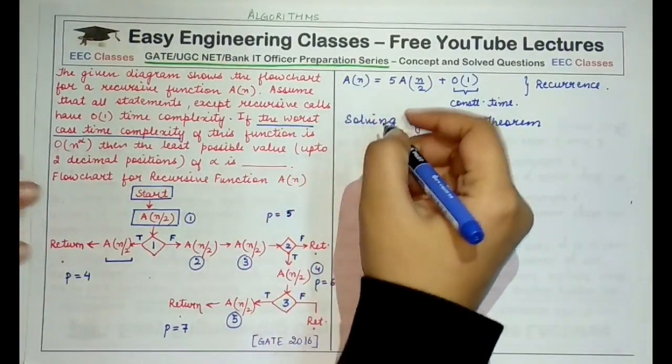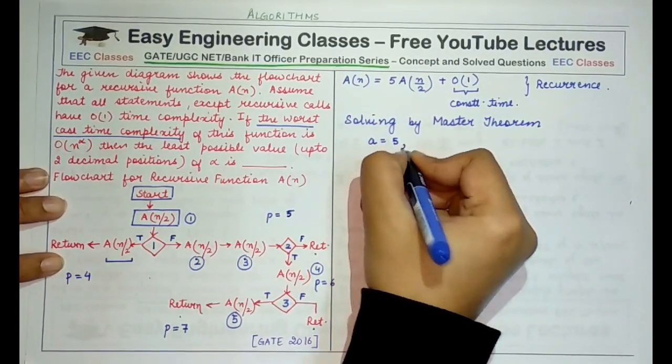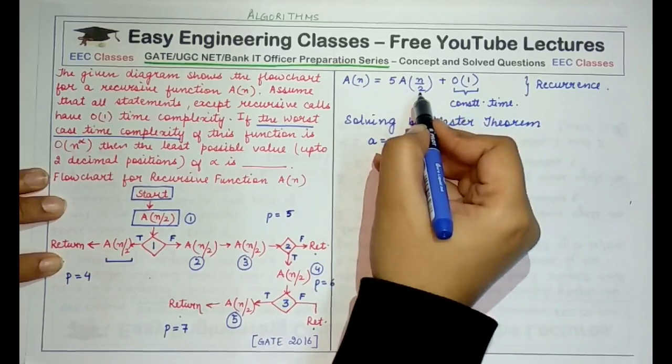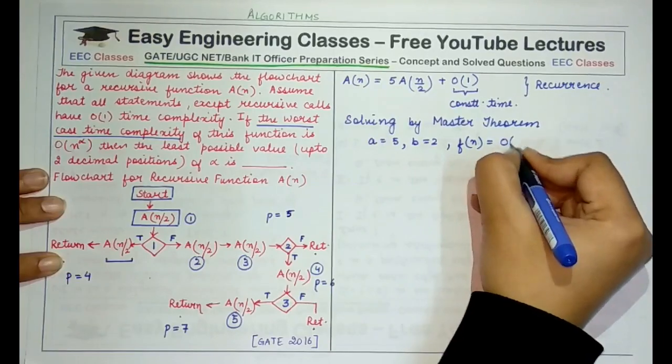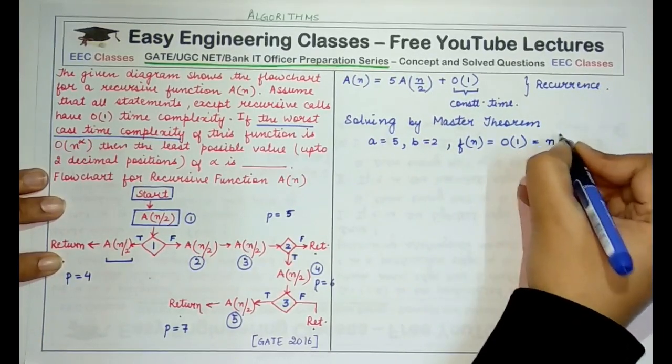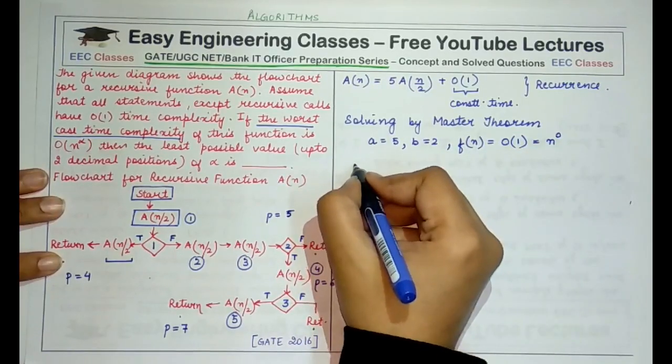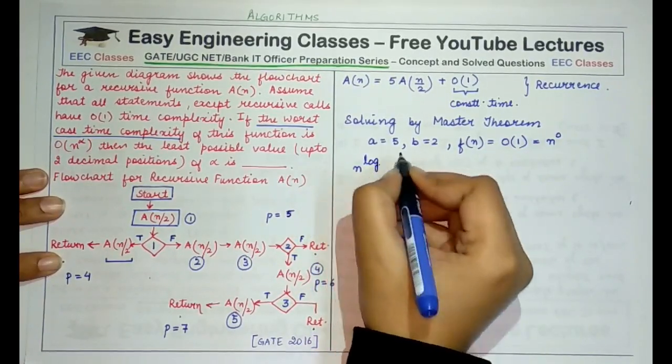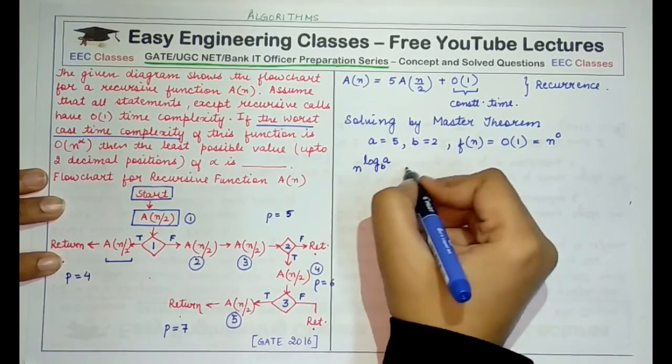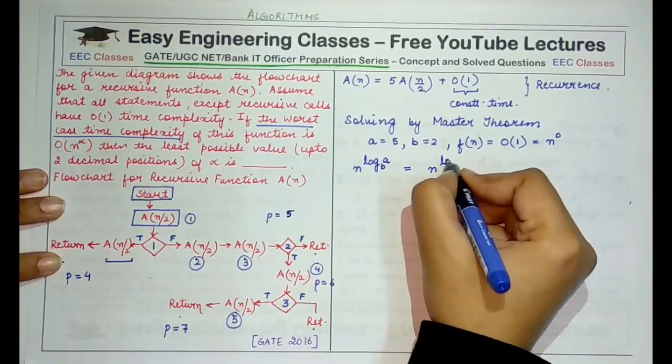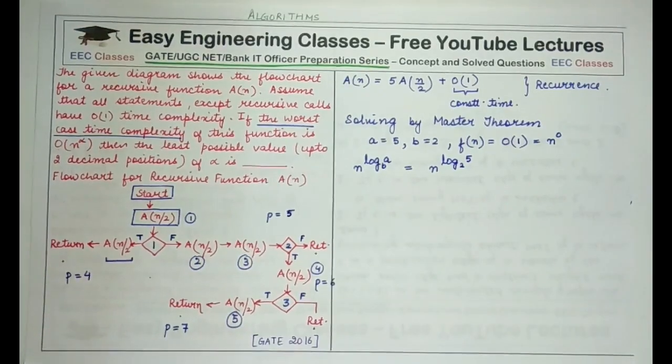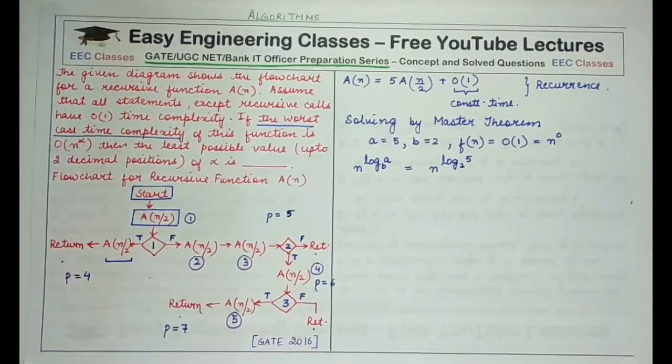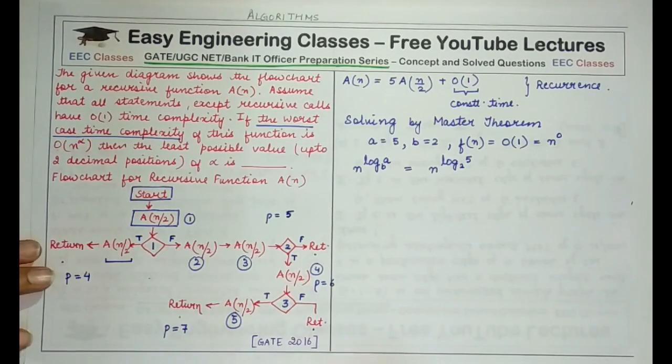So here a is 5. The value of b is 2. This is b, this is a, and f(n) is order of 1. Or you can also say it to be n raised to power 0. Now let's find out the value of n raised to power log of a given base b. So this would come out to be n raised to the power log 5 base 2.